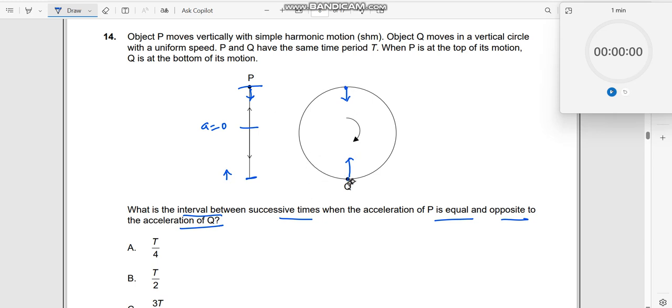Why half a time period? Because the time taken by this particle to start from here and to go around one full circle is time T. In the time period, if you map this one here, the particles are exactly the same.